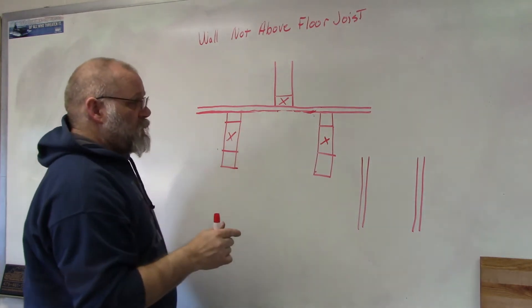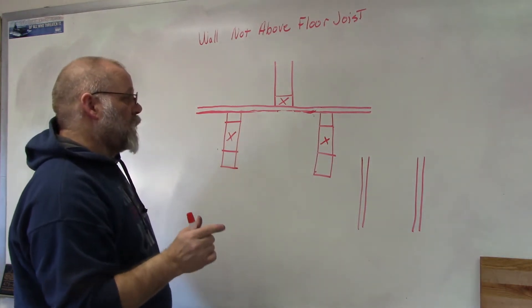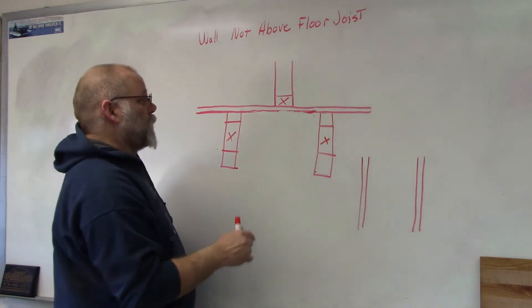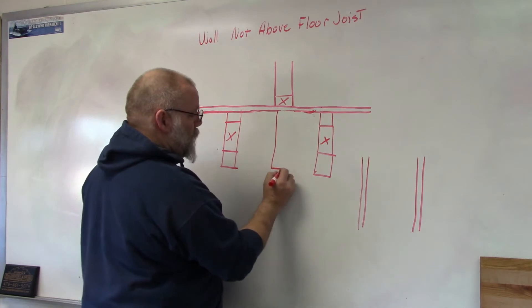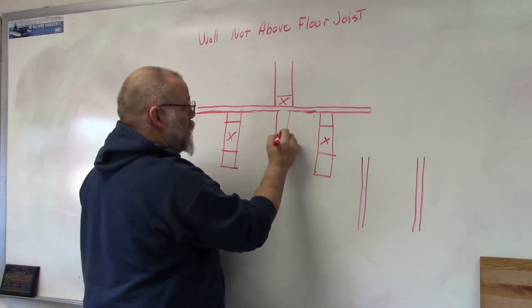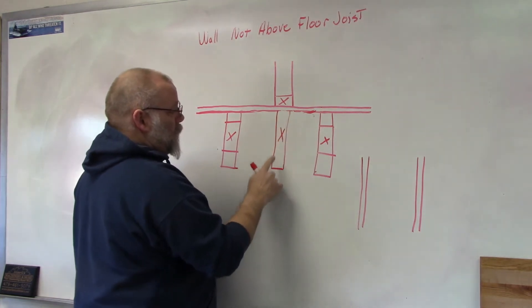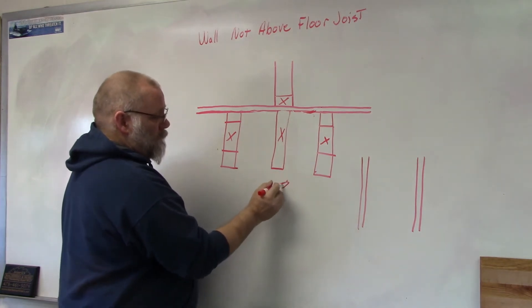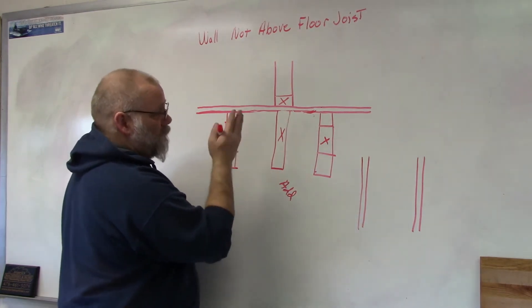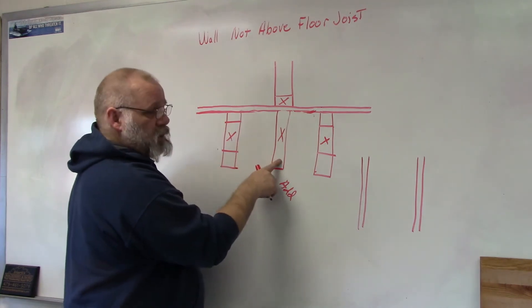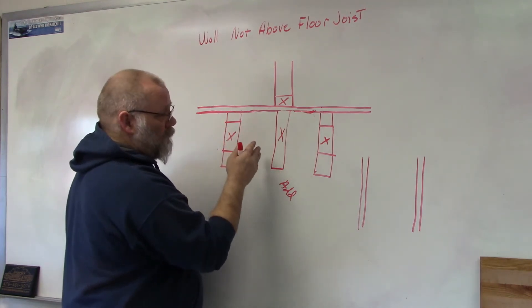So there's a couple methods in which you can solve the problem. When you're building, you check your floor plans and you say, oh we're going to have a wall so you can add another floor joist. If it's a long wall, you can add another floor joist underneath it to support the wall.